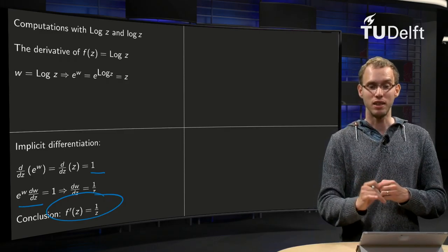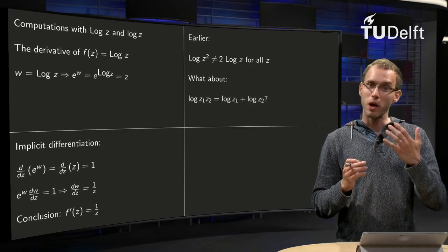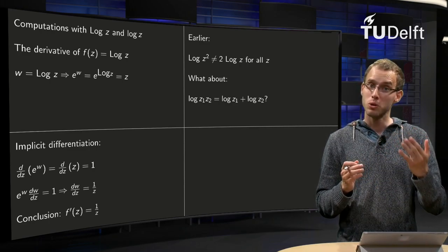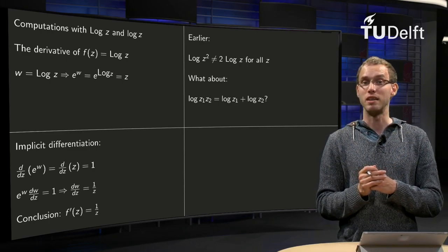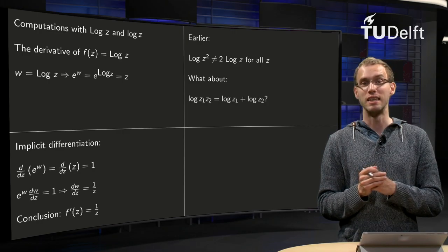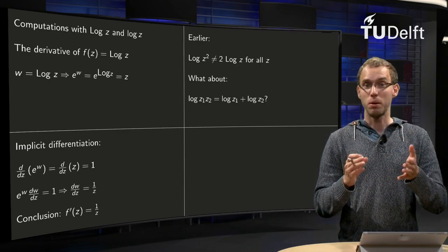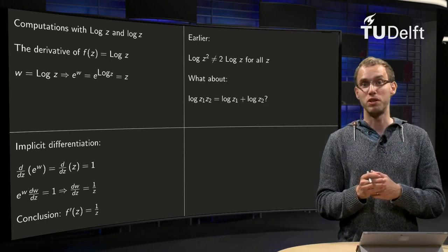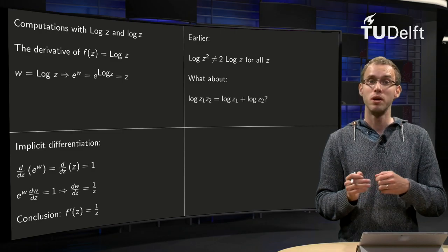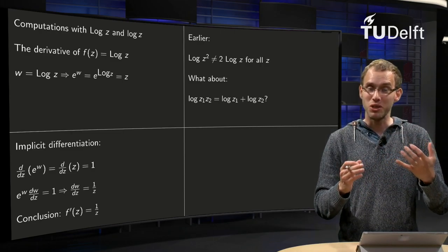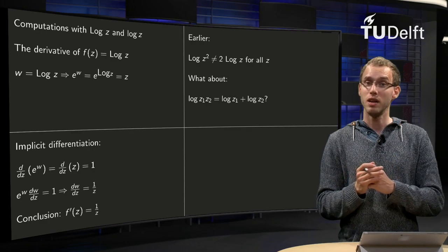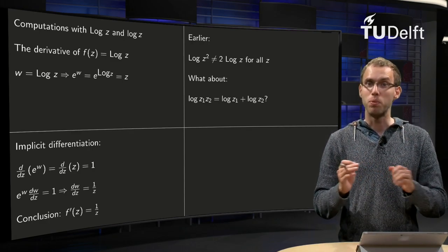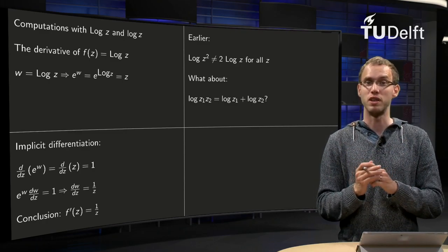What about our second example? We have already seen that capital log of z squared is not necessarily equal to 2 times capital log of z, depends on the value of z. So we know that log of z1 times z2 won't be equal to capital log of z1 plus capital log of z2. For capital log of z, this identity probably will not hold for all values of z.